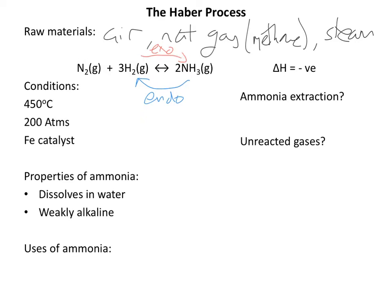Both reactions will be occurring. When answering exam questions on this and justifying conditions, they usually tell you about the forward reaction — here the forward reaction is exothermic; the negative delta H means it's exothermic. Because it's a reversible reaction, we don't get a 100% yield of ammonia. As soon as we're forming the ammonia, some of it is breaking back down to reform the nitrogen and the hydrogen. So initially we put the two reactants together, we start forming ammonia, some of that breaks down, and then more hydrogen and nitrogen come together to make the ammonia.